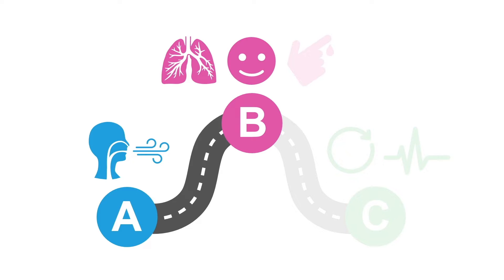Behavior control isn't usually a problem, although these patients can have confusion and other mental status changes that should concern you for a potentially fatal overdose. Remember to check their blood sugar, especially since they are vomiting and may be confused.